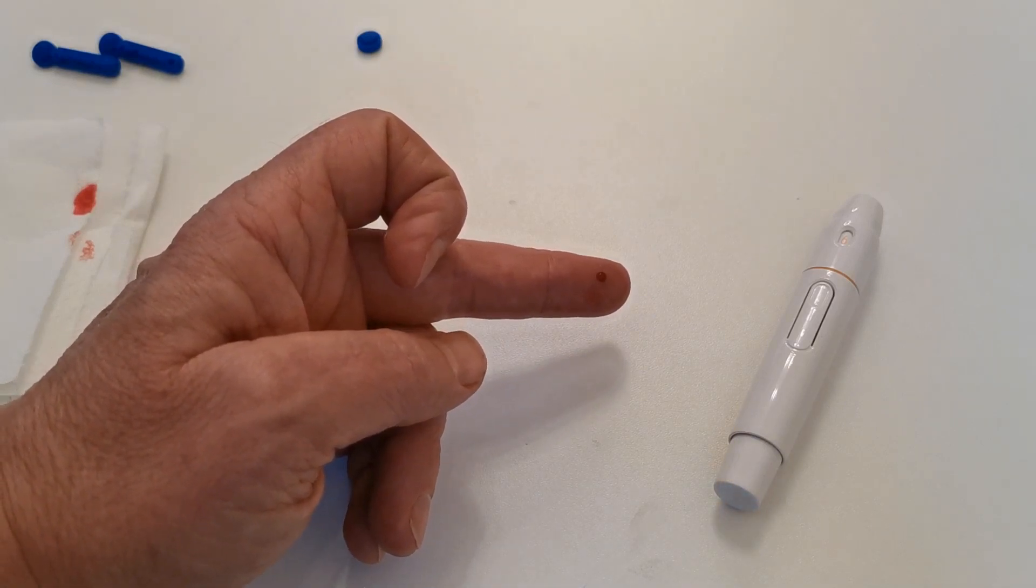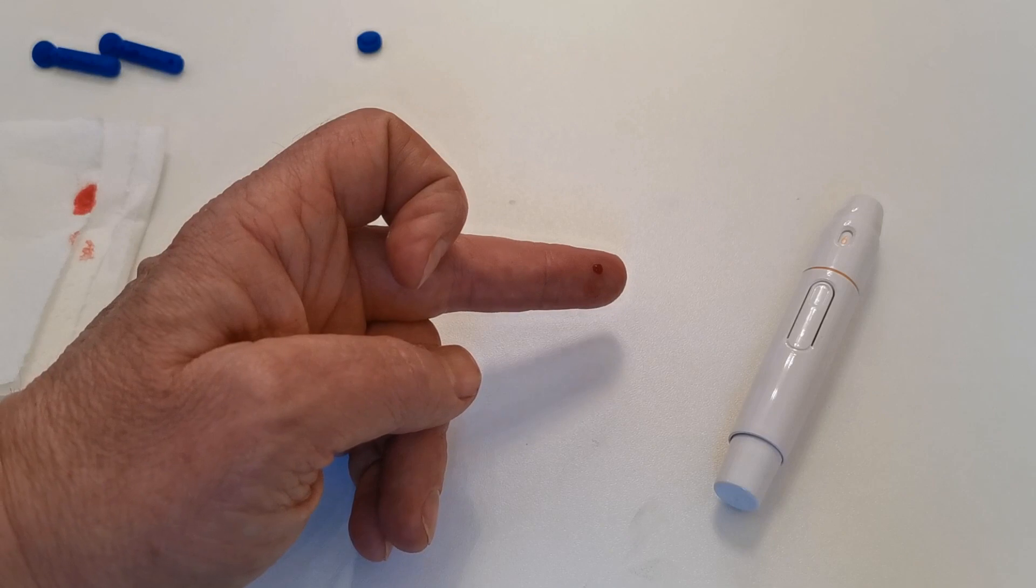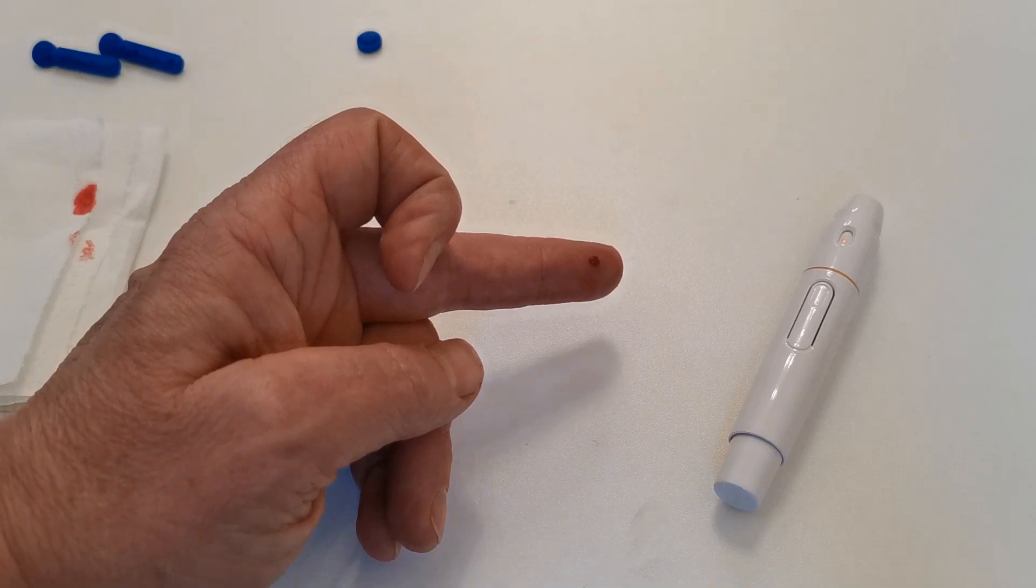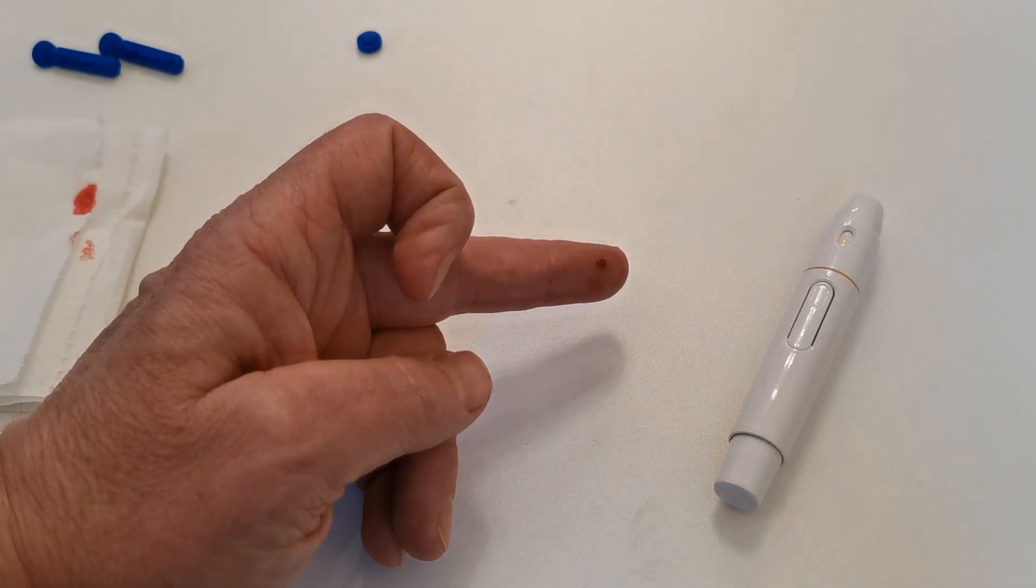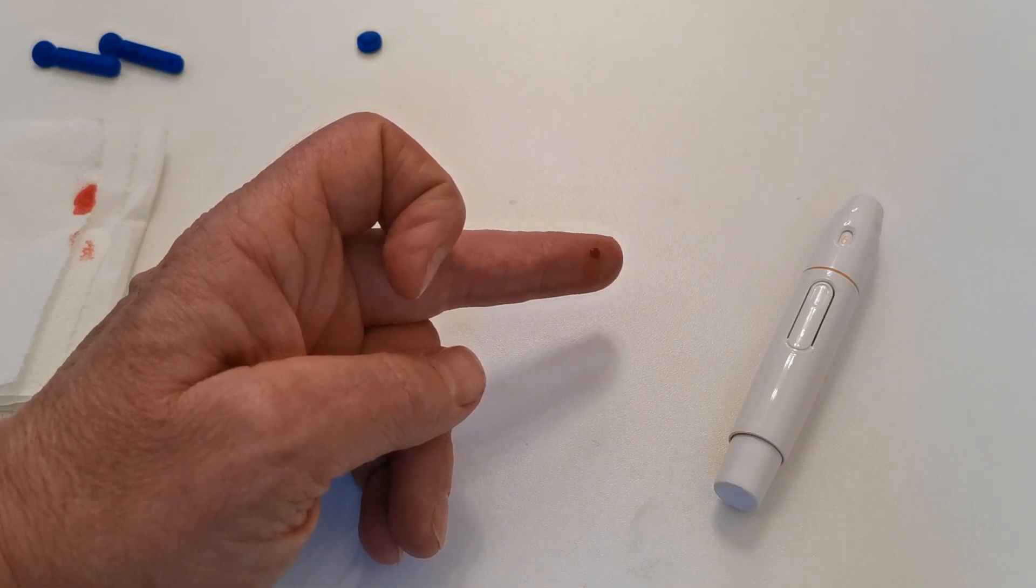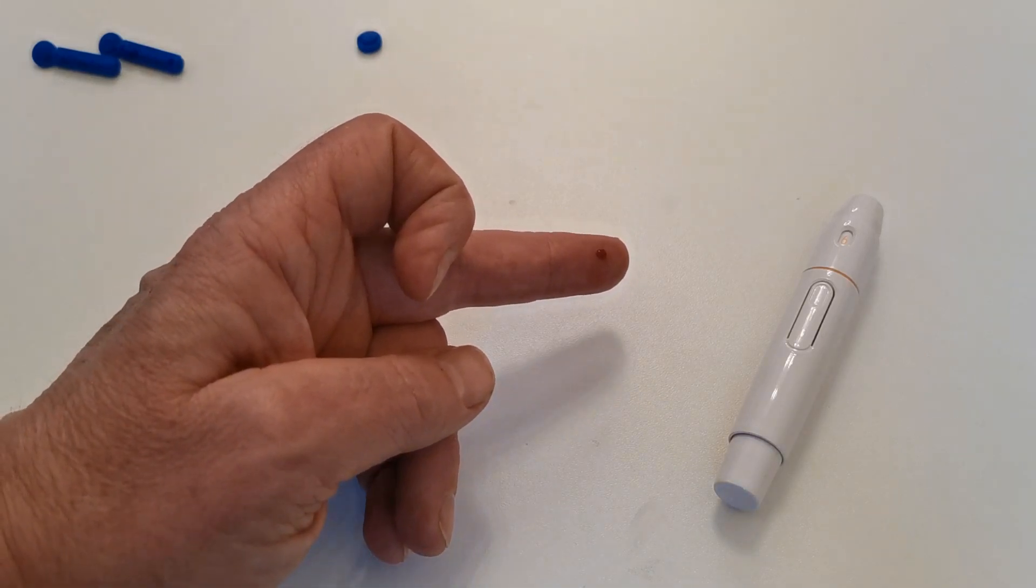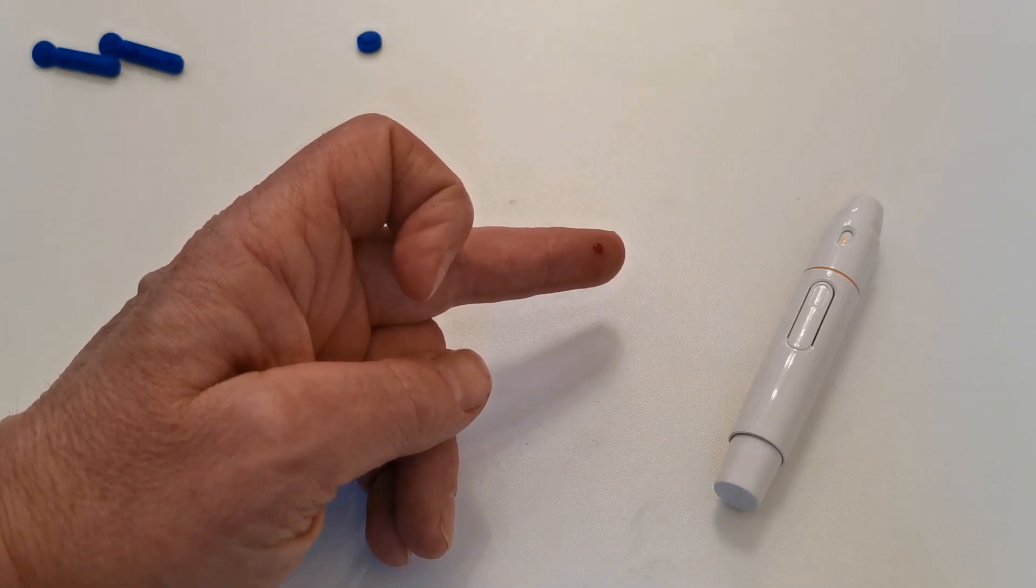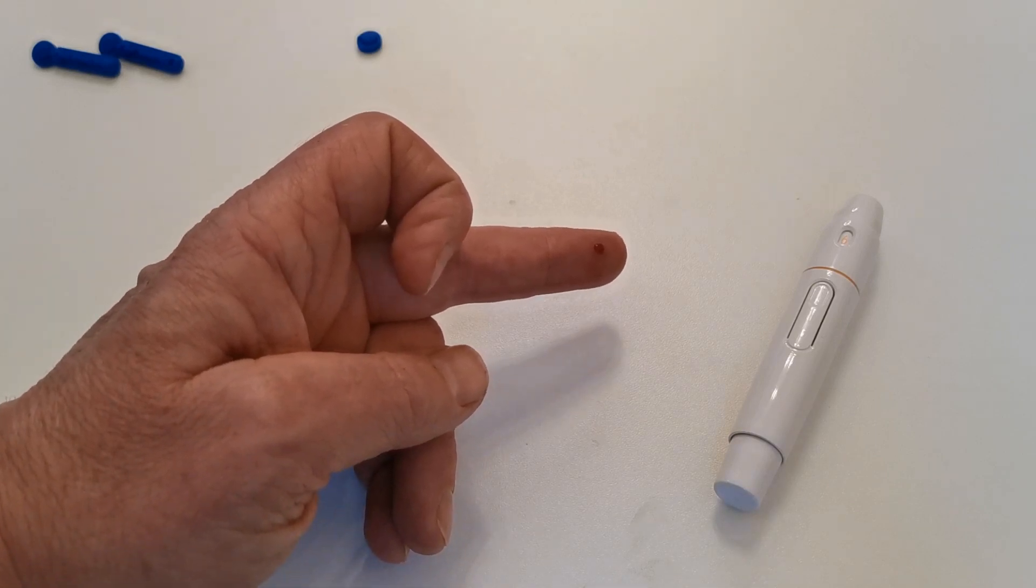If you've not lanced yourself deeply enough, then be prepared to re-lance rather than trying to use an inadequate sample or a sample that you've had to form squeezing your finger to run your test device. By doing this method and using a naturally formed second droplet of blood, you should get good quality test results on both cholesterol, uric acid, hemoglobin and glucose tests.